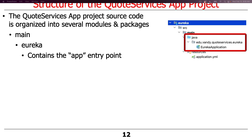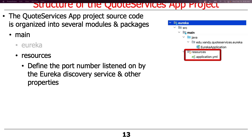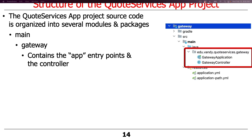The Eureka module has a Eureka folder with the Eureka application, but there's no controller, no service — just the application. All it does is carry an annotation that says it wants to be a Eureka server. That contains just the app entry point into that microservice. It also has a resources package that defines the port number listened on by the Eureka Discovery Service, which needs to be known by the other services so they know where to go to register themselves.